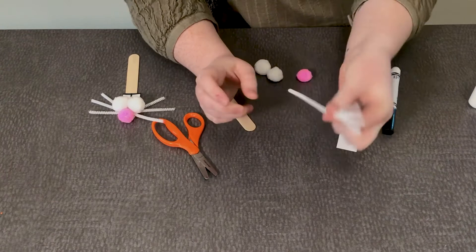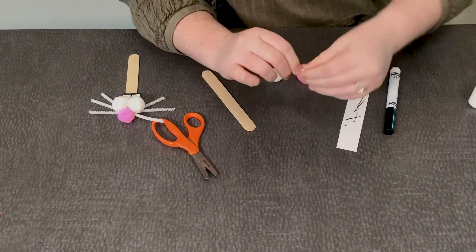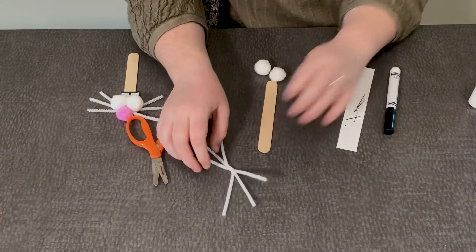After we have our chenille stems trimmed down we're going to give them a twist in the middle. I'll just take all of them and give them a little twist so they all can stay together relatively easy, and these are going to be our bunny whiskers.